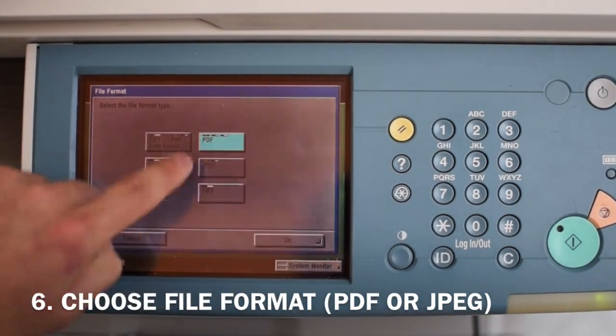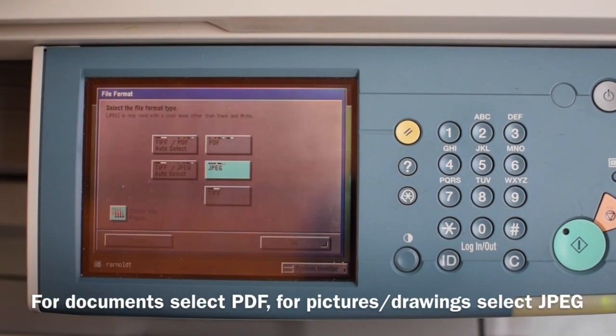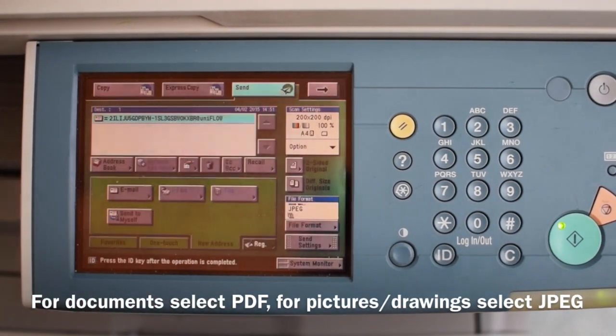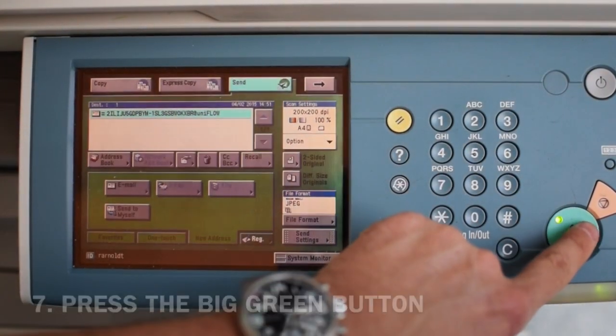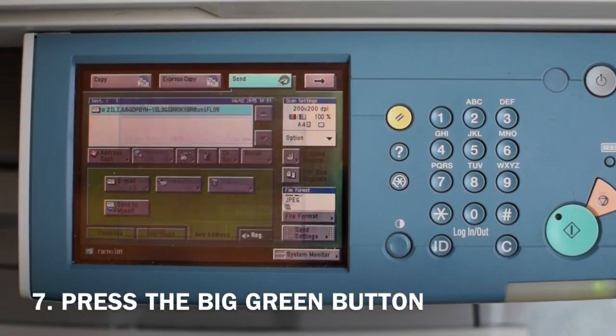Next, you select the format. Select PDF for a document or JPEG for an image or drawing. Press the big green button to scan.